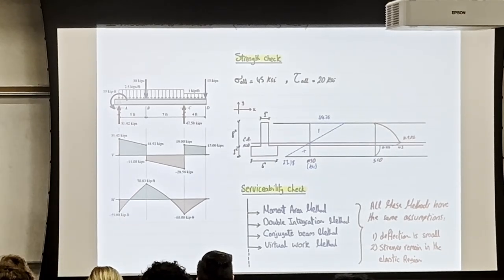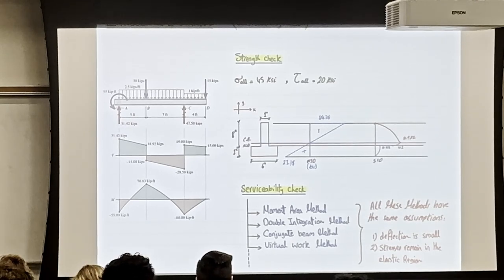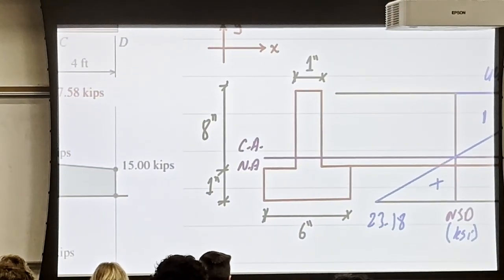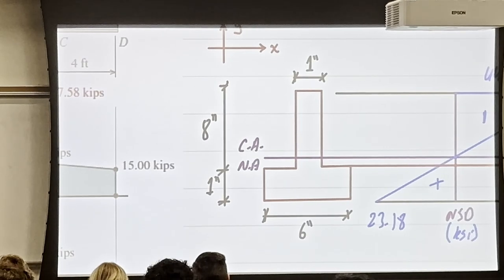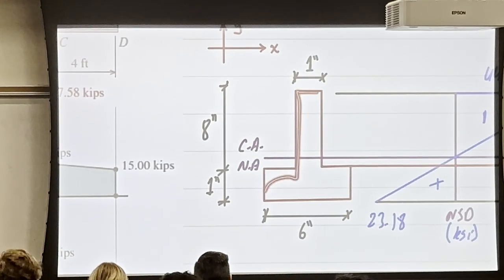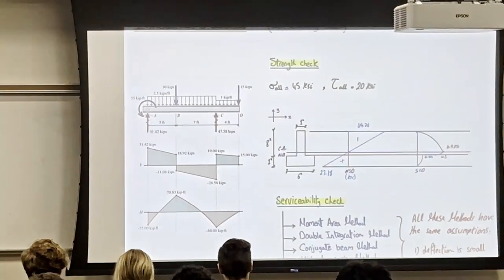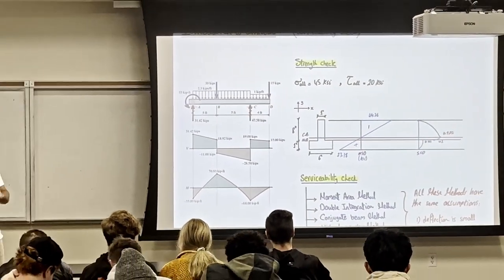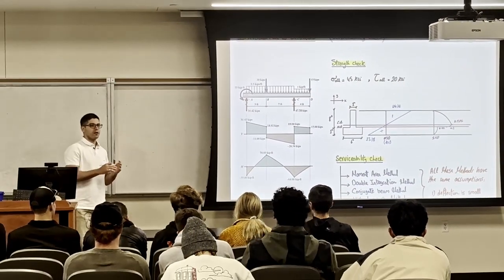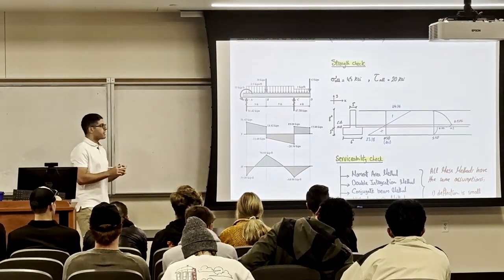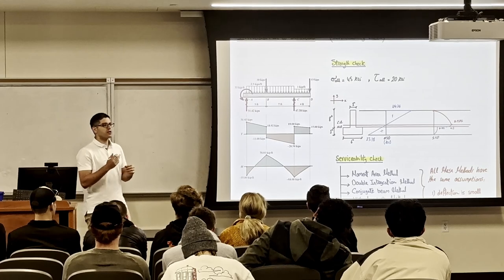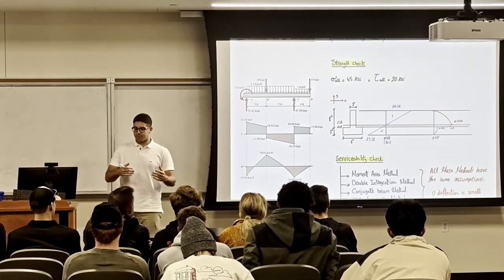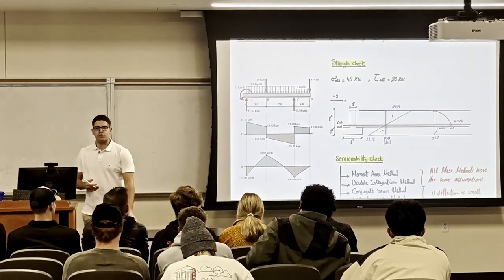This is what we call a strength check, and this is what you're going to do in real life. What's missing — that you'll take in an advanced class — is how you come up with dimensions that are safe from the first time. In real life or in design offices, you start by assuming dimensions.